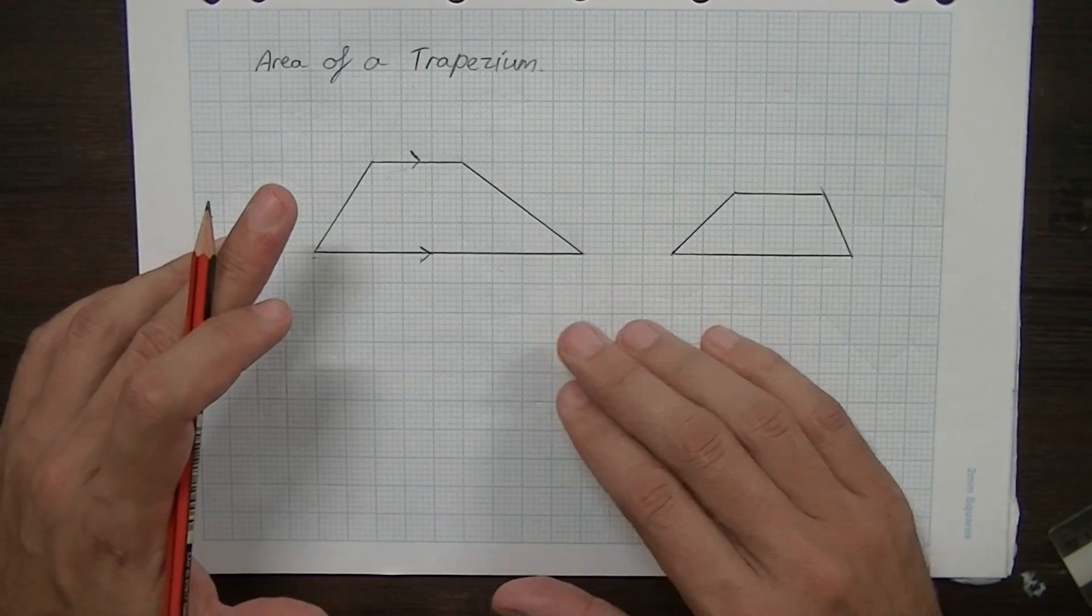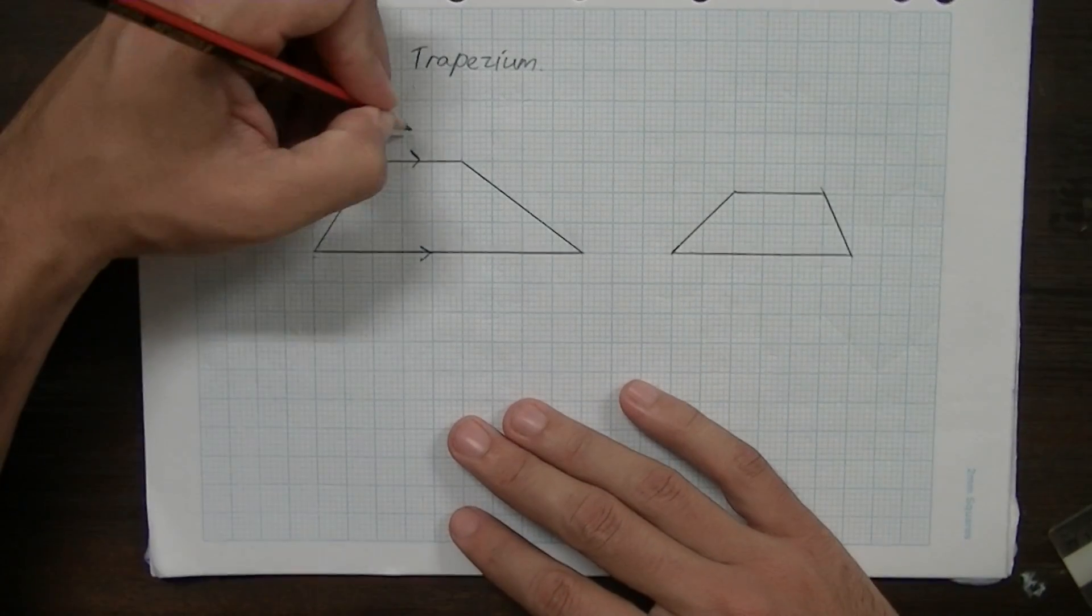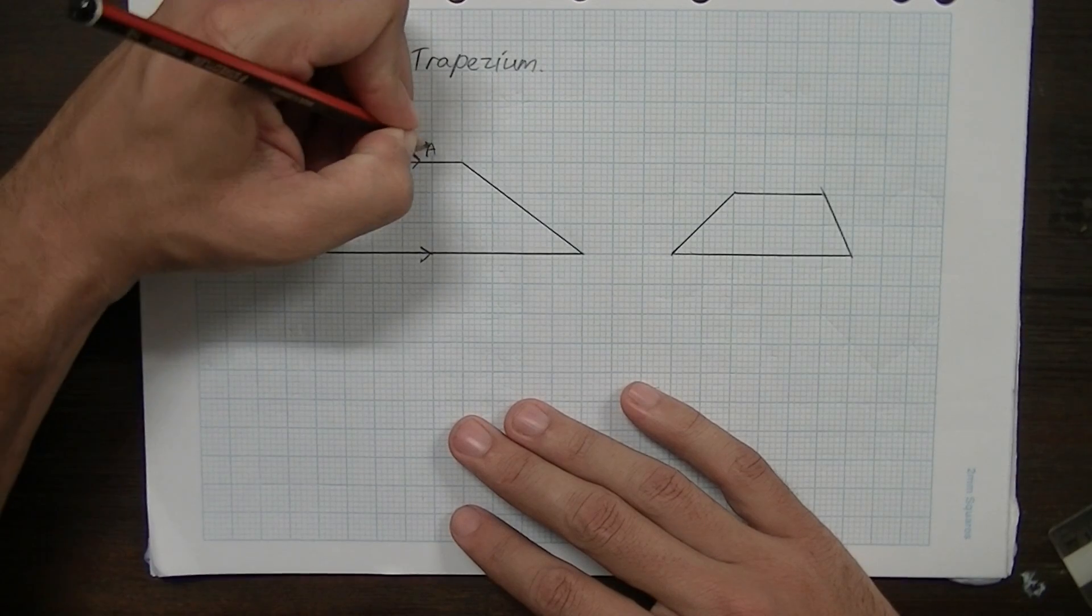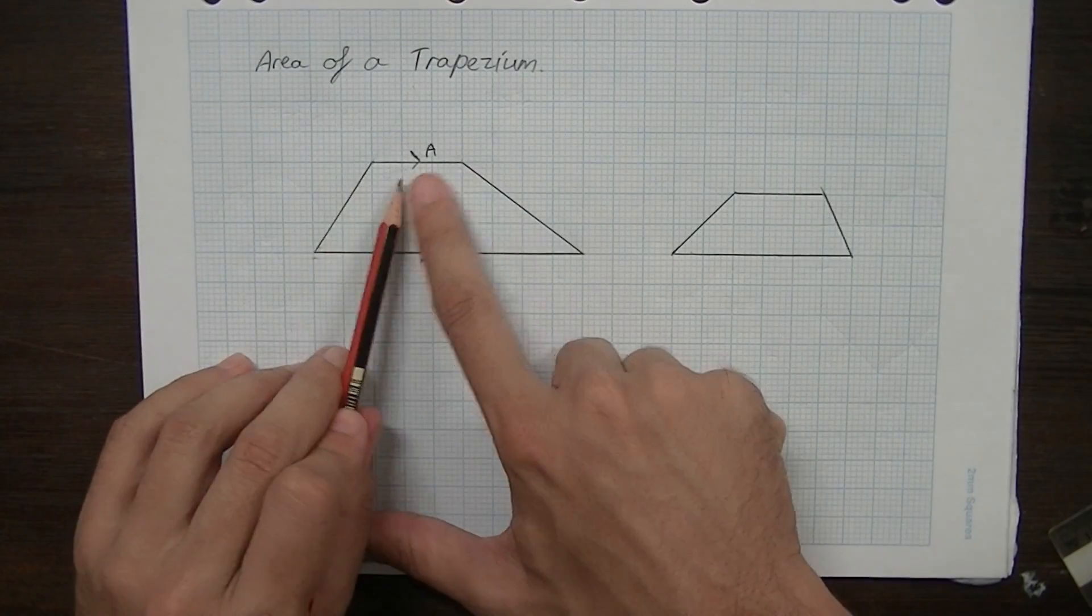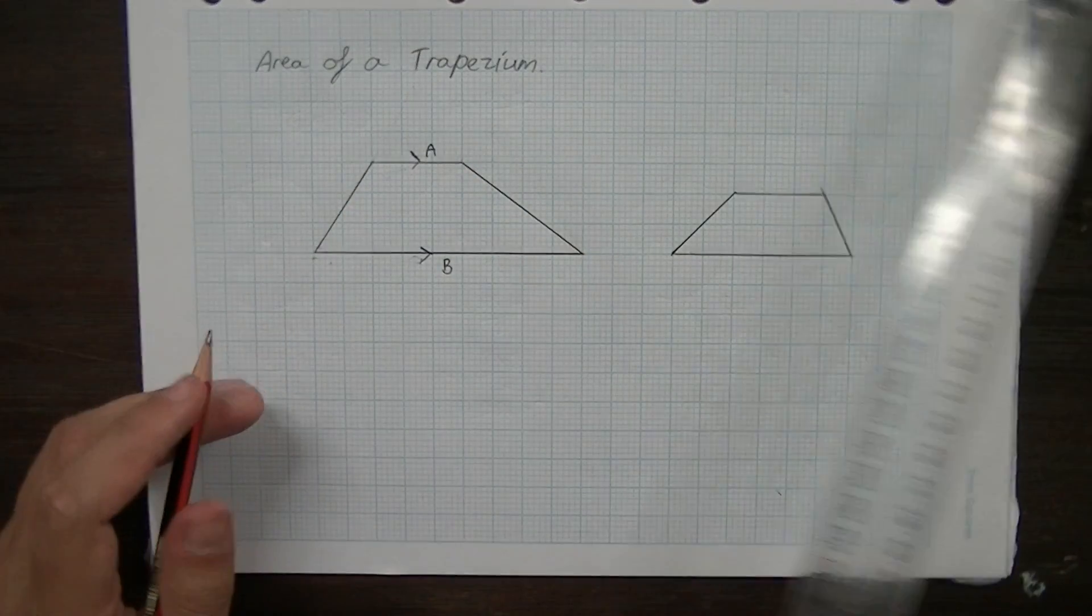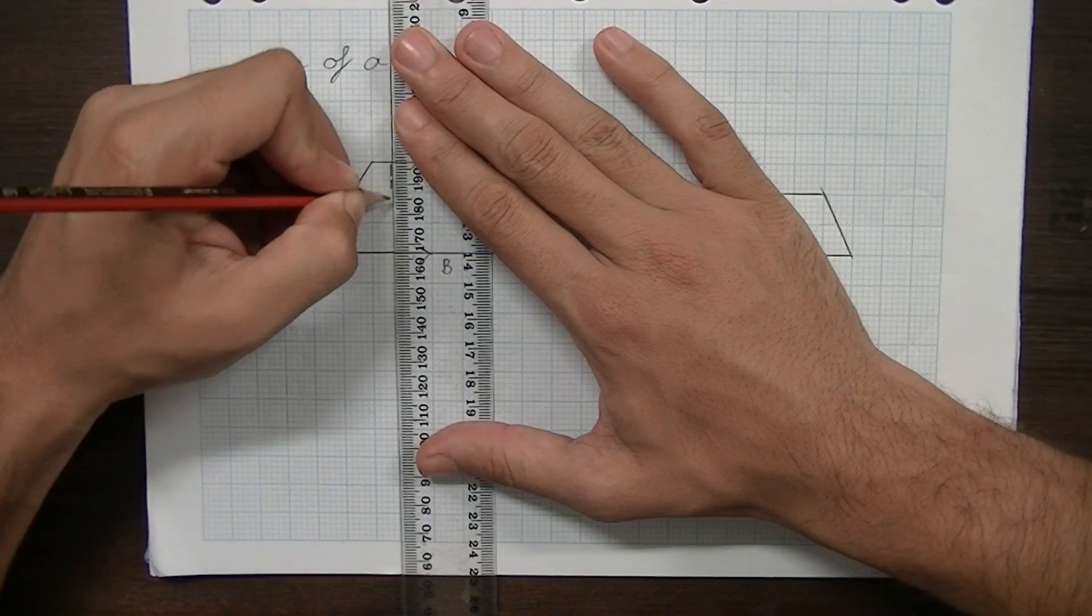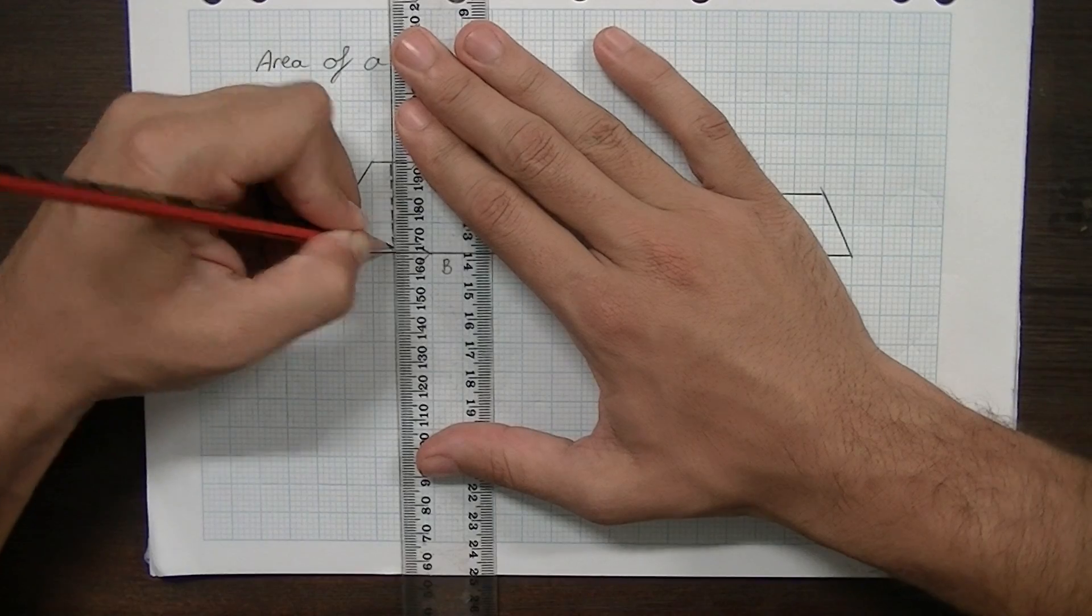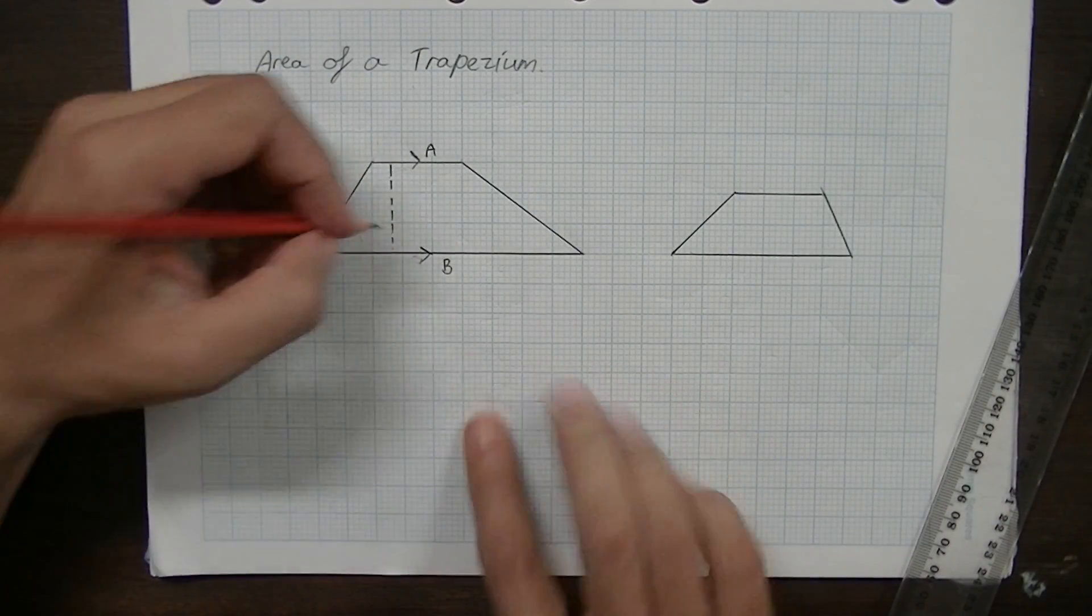First of all, we need to do a little bit of labelling so we can think a little bit about what it works. I'll label the top as A and I'll label the bottom as B. So short side here I'm going to call A, bottom side here I'm going to call B. We also need to think of the height. And when I talk about height, I mean the distance directly from the bottom to the top. So there's our height.